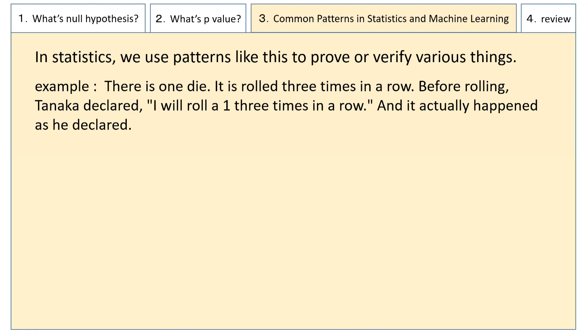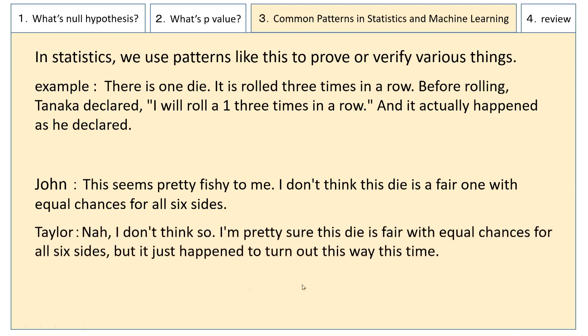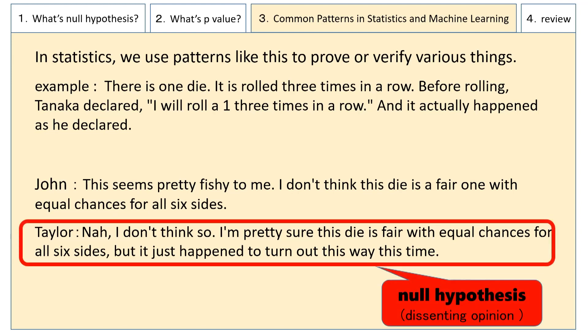John and Taylor had a debate after looking at these results. John says, "This seems pretty fishy to me. I don't think this die is a fair one with equal chances for all six sides." Taylor refutes John's claim with, "Nah, that's not true." So Taylor's dialogue represents the null hypothesis.